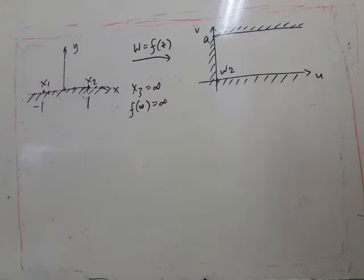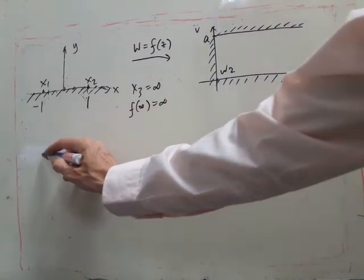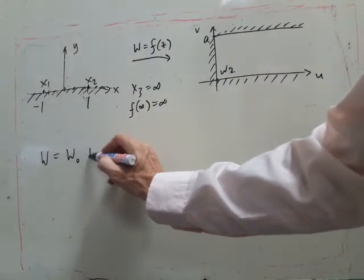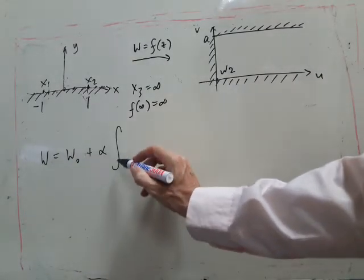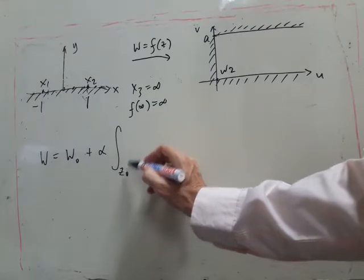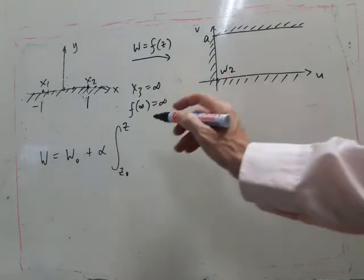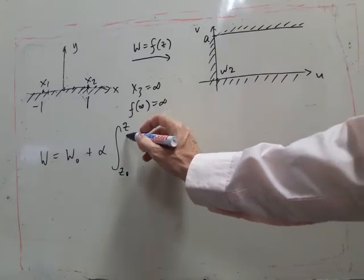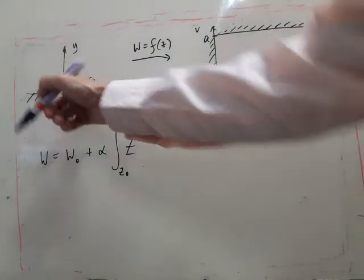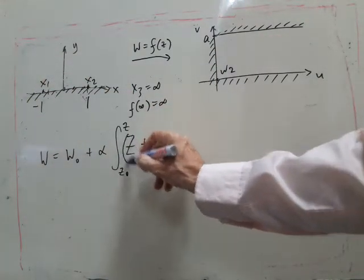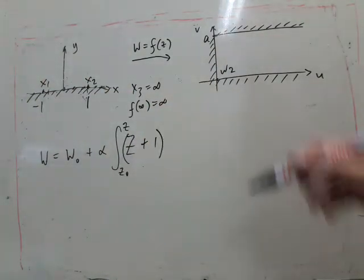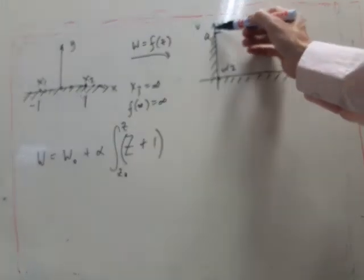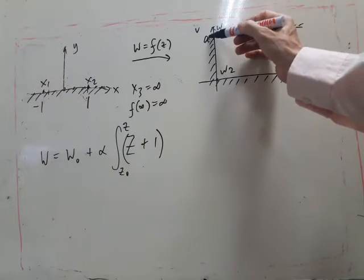Okay, so we have w equals w naught plus alpha times the integral from z naught to z. Now we're going to see the choice of integration. So we've got big z minus minus one, so that's plus one.